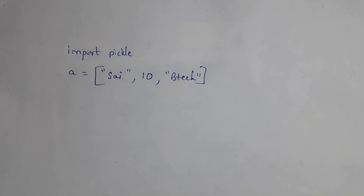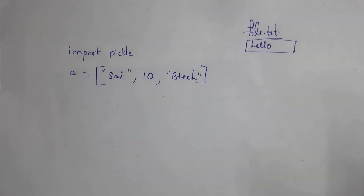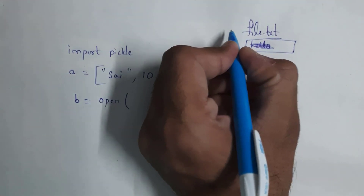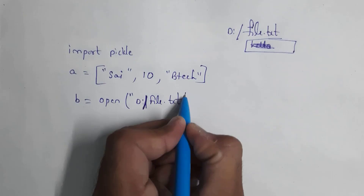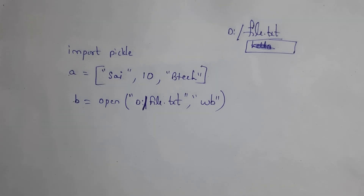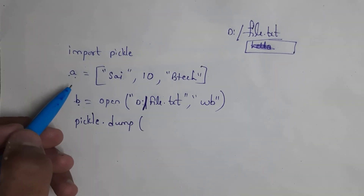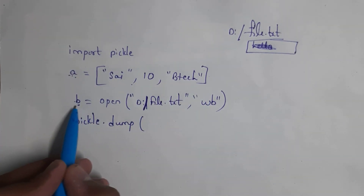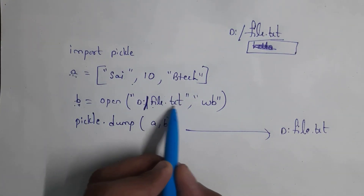So in order to store the list inside the file, write b = open('D:/file.txt', 'wb') — opening in write binary mode, because we are storing a list not text. Now write pickle.dump(a, b) to copy the list in object a to object b, which is file.txt. Whenever you run this code it will store the list into the file. We should not open this file directly — if you open it directly, you will see data in binary format like zeros, ones, dollar signs, which is not in an understandable format.